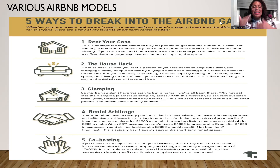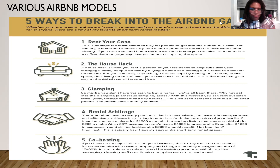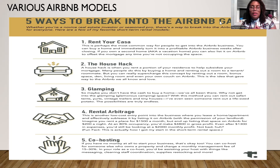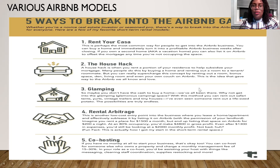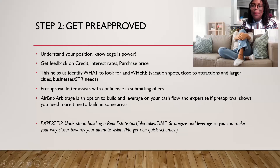Maybe you do rental arbitrage for a year and that $2,000 a month becomes $24,000. Now you get a second property and go from $24,000 to close to $50,000 a year — now you have a down payment and can buy a house or a piece of vacant land. Step by step, understand the process, understand where you want to go, and you will get there.